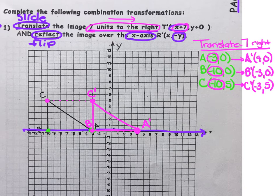You should have gotten A prime as 4, 0, B prime, negative 3, 0, and C prime, negative 3, 5.